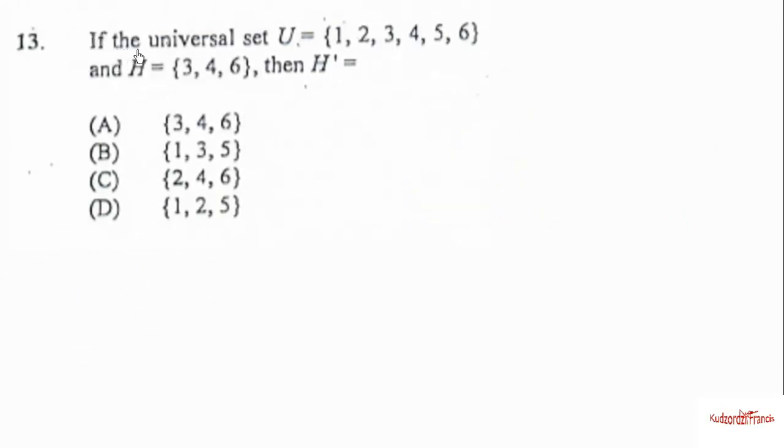The 13th question: If the universal set U equals {1, 2, 3, 4, 5, 6} and H equals {3, 4, 6}, then H prime - the complement of H are elements in the universal set that cannot be found in set H. So let's cancel out the elements in set H. The remaining are H prime, so H prime will be equal to {1, 2, 5}. Therefore, the correct answer is D.